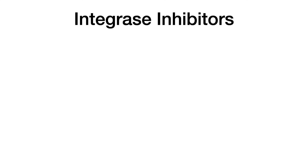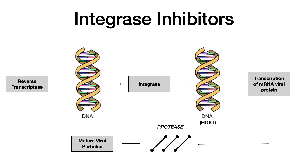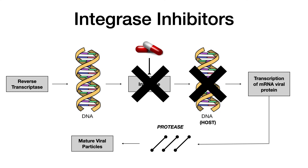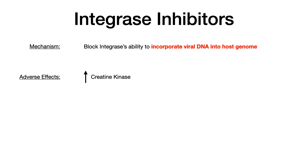Let's talk about the integrase inhibitors. Integrase's role is to integrate the viral double-stranded DNA into the host genome. So we give somebody an integrase inhibitor — you introduce a drug that inhibits integrase, knocking out its ability to incorporate the DNA into the host genome. The only adverse effect you need to know is that integrase inhibitors can increase CK — creatine kinase. My mnemonic: instead of saying 'integrase,' say 'into-CK-rase' — the T becomes an up arrow and instead of integrase it's 'intoCKrase,' meaning increase CK. That's the easiest way to memorize the high yield side effect of integrase inhibitors.